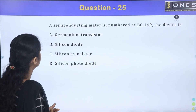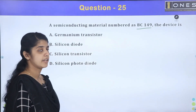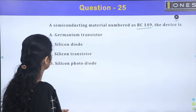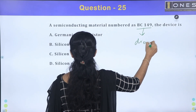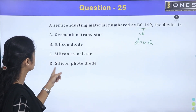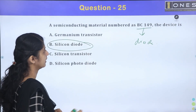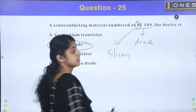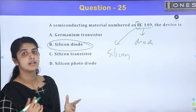Next question. The semiconductor material numbered BC149 — what device is it? The options are: germanium transistor, silicon diode, silicon transistor, or silicon photo diode. BC149 is a silicon transistor, where 'B' indicates it is built with silicon material.